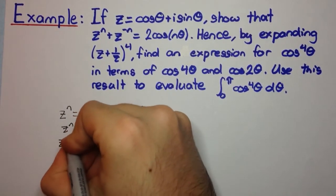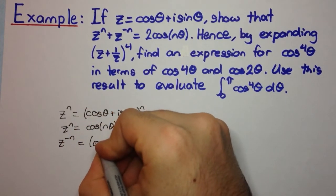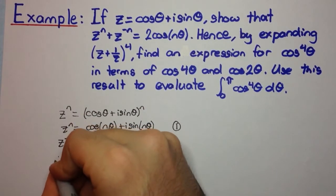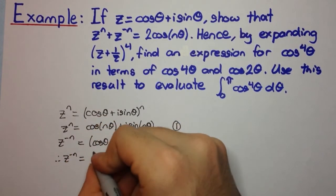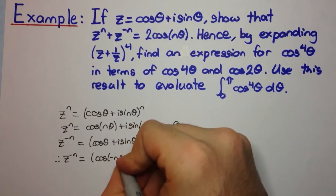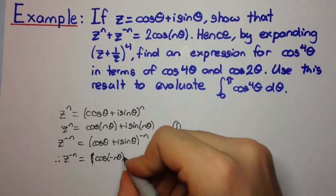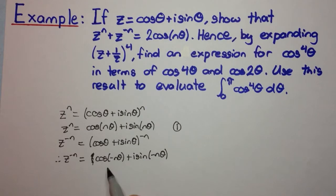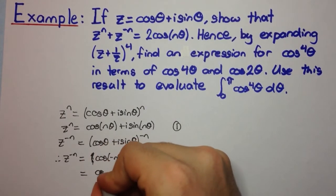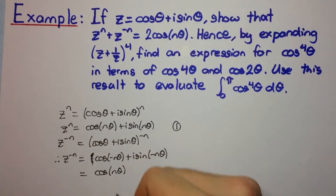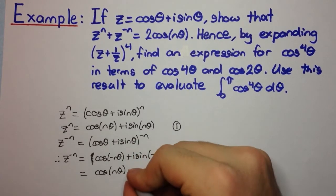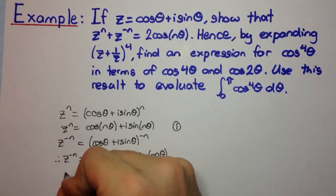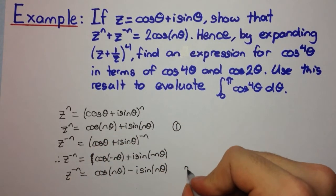Now let's look at z^(-n). That's (cos θ + i sin θ)^(-n), so z^(-n) equals cos(-nθ) + i sin(-nθ). Since cosine is an even function, cos(-nθ) = cos(nθ). Since sine is an odd function, this becomes minus i sin(nθ). Let's call that equation 2.